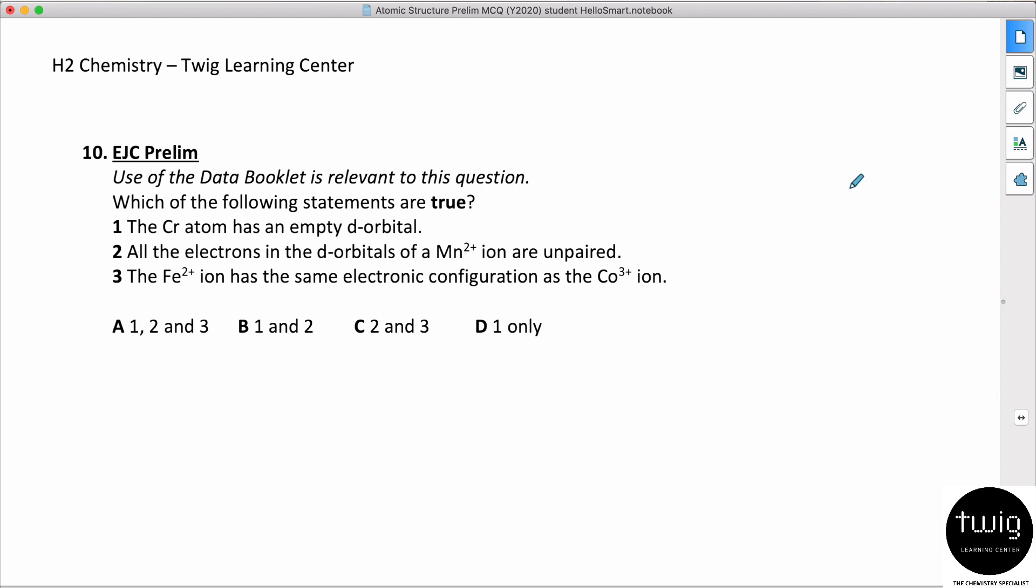The use of the data booklet is relevant to this question. So chromium atom, again the configuration is 3d5 4s1. They say chromium atom has an empty d orbital - it's not true because 3d5 looks like this: one, two, three, four, five. So it doesn't have any empty d orbital, so this is out.